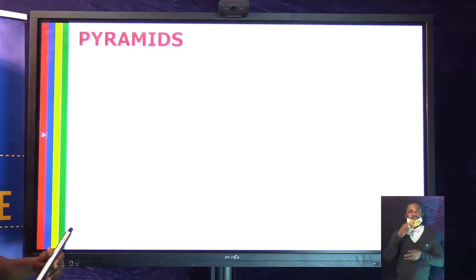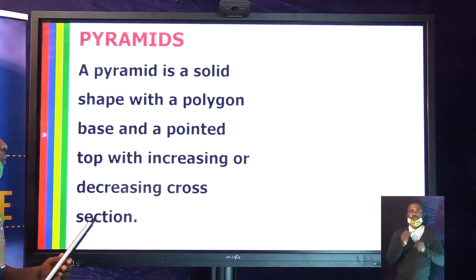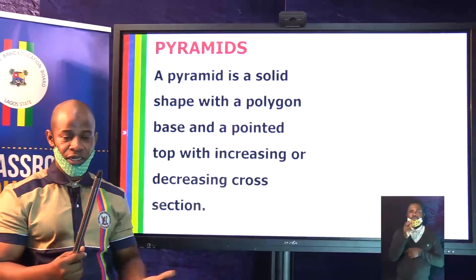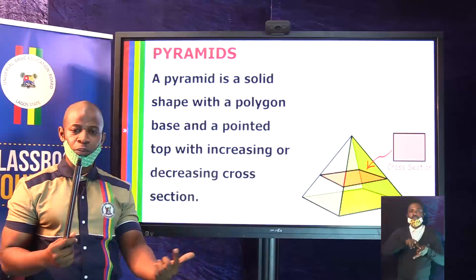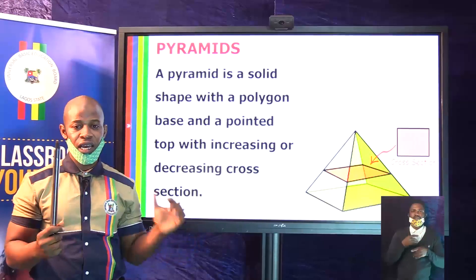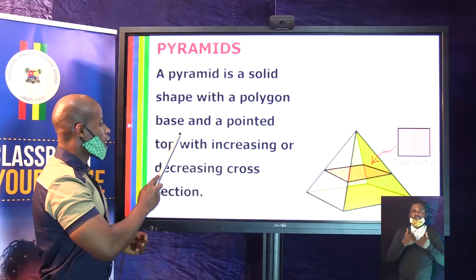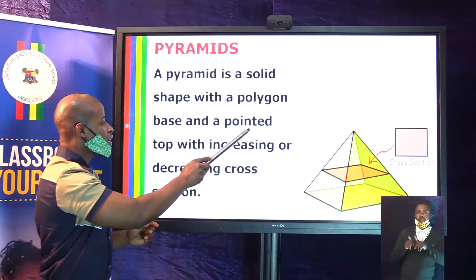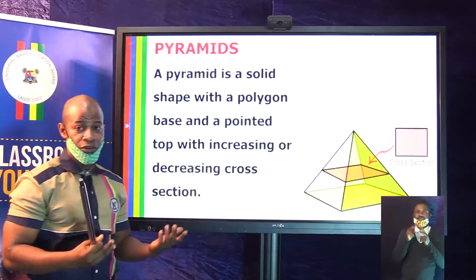Now let's look at pyramids. A pyramid is a solid shape, a three-dimensional shape. It has a polygon as the base — the bottom is flat and in the shape of a polygon. Don't forget that a polygon is a plane shape that has straight, closed sides. It also has a pointed top — the top is very sharp and ends at a vertex.